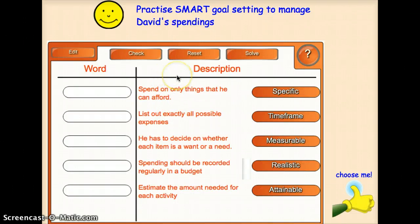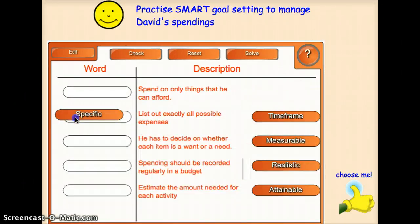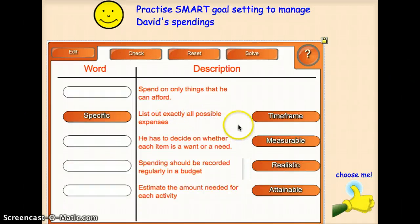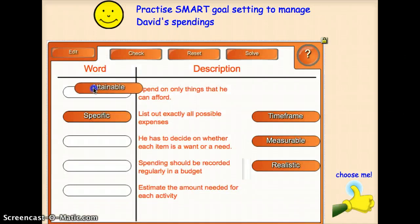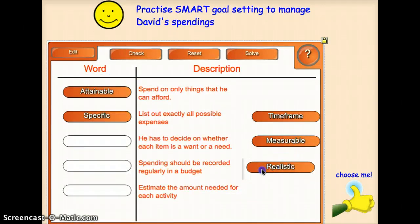The pupil will answer the question using the SMART framework — for instance, specifically listing out the exact expenses and spending only what he can afford (attainable), and deciding whether each item is a need or want (realistic).